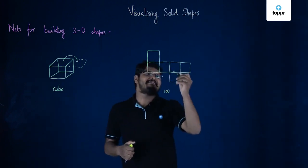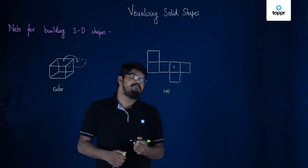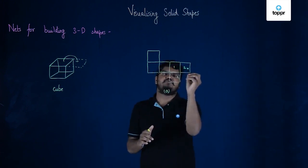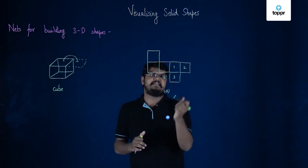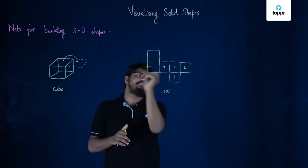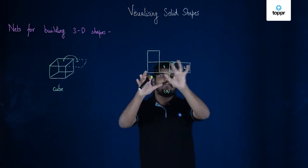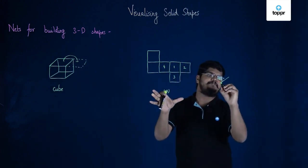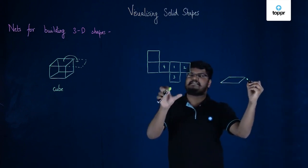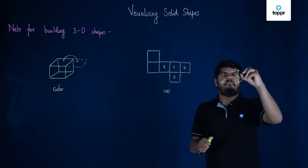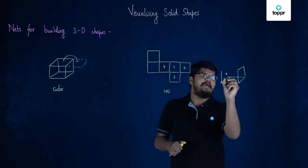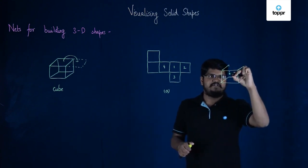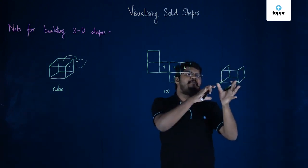Consider that this is my base — let's say this is face 1. This particular face will be folded on this side, so it will be face 2. This one will be folded on this side, so face 3. This one will be folded on this side, so face 4. Once folded, you will have a figure where you have a base and on three sides you have squares which have taken the position of these net faces and have partially formed a cube.